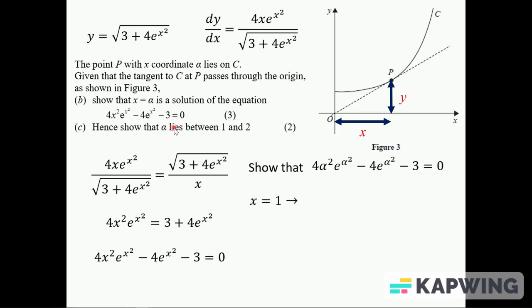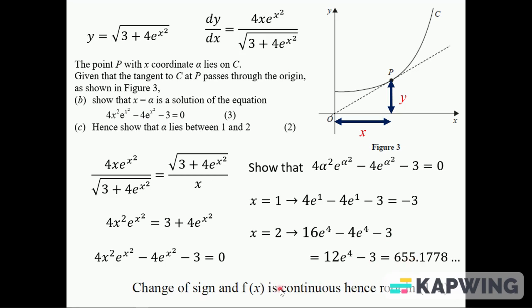We've got to show alpha lies between one and two. So we need to demonstrate a change of sign. If we've got x is 1 into here, we'll have 4e to the 1, take away 4e to the 1, take away 3, which just gives you minus 3. And putting x is 2 in, we'll have 16e to the 4, and then 4e to the 4, take away 3, which is 12e to the 4, take away 3. Definitely positive, because that is 655. So a considerable change in sign. Make sure you write down at the end, since it's continuous, there's a root in that interval.